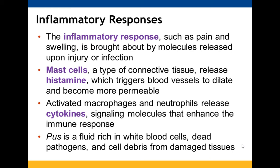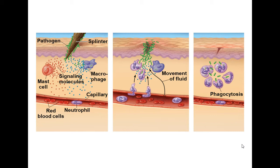Pus is an indication of infection — it contains white blood cells, killed pathogens, and cell debris. In an example with a splinter: the splinter enters the epidermis with surrounding pathogens, mast cells and macrophages send signaling molecules, the capillary dilates, neutrophils come out to break down the pathogen, and as the pathogen is destroyed, swelling diminishes, fluid stops leaving the capillary, and things return to normal.